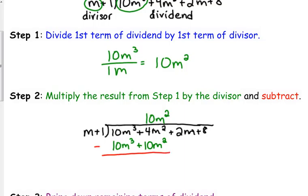Now, we need to subtract. You need to be careful when you subtract. You've got to make sure that you subtract both terms. Some people find it easier to change the signs of what's on the bottom line and add. Whatever works best for you. But, 10 minus 10 is 0. 4 minus 10 is negative 6m squared. Bring down the remaining terms. So, bring down the plus 2m and bring down the plus 8.